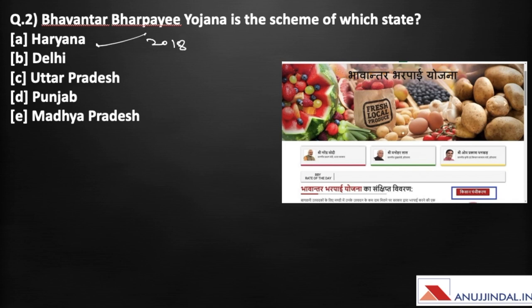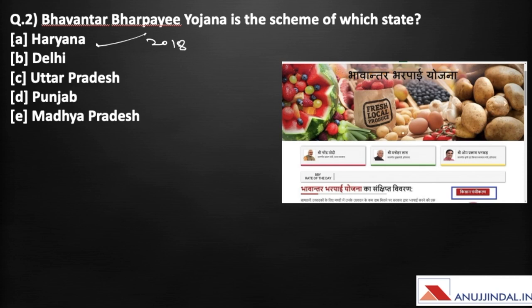There is one condition for farmers who want to benefit from this scheme: they have to register on the Meri Fasal Mera Biora portal, where farmers self-register their crops and details of their production. Recently the Haryana government has added more crops to this scheme. Originally potato, onion, tomato and cauliflower were included; now carrot, peas, quinoa, guava, capsicum and brinjal are also being included.